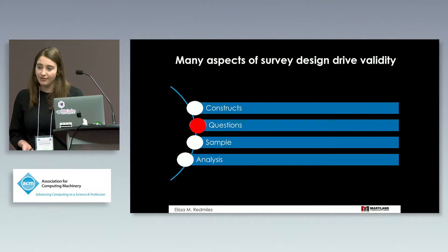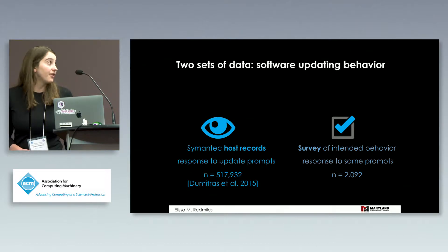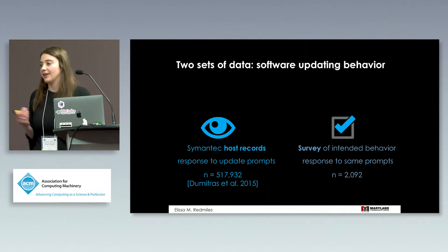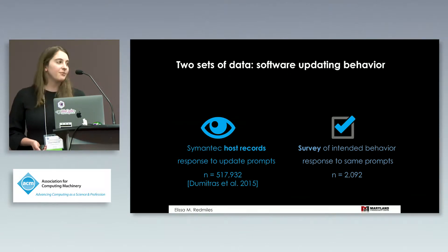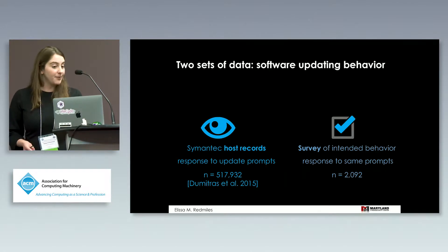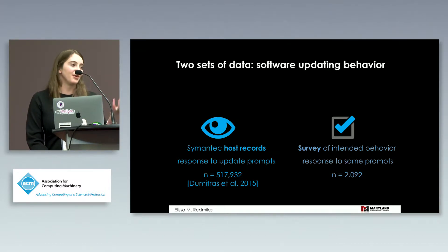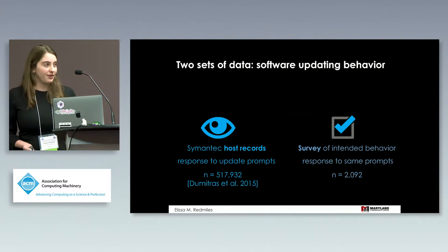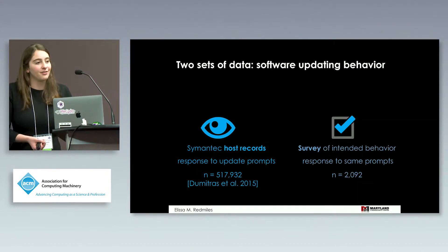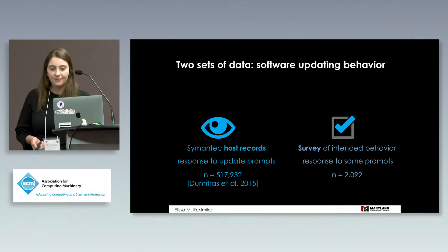In this talk I'm going to primarily focus on the issue of questions and how people's responses to survey questions relate to real-world answers. To do that, we're going to use two sets of data about an exemplar security behavior: software updating. There have been 22 prior papers on software updating behavior, making it a well-studied problem for testing how well surveys represent real-world behavior. We used host records from Symantec antivirus systems to look at people's responses to update prompts.